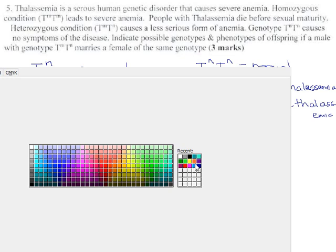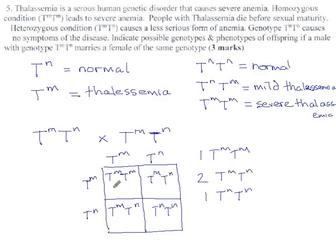For the phenotypes, as in what traits come out, this one, this kid would have severe thalassemia, this one would have mild, this one would have mild, and this kid is free of thalassemia. So it's one to two to one for the phenotype also. One severe to two mild to one normal.